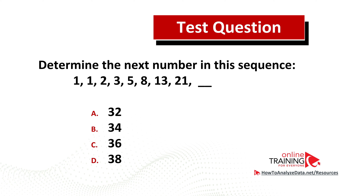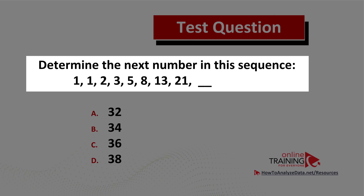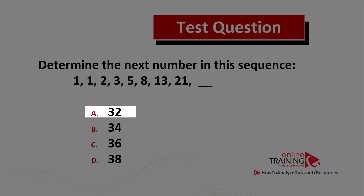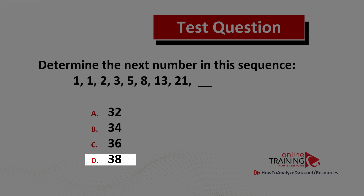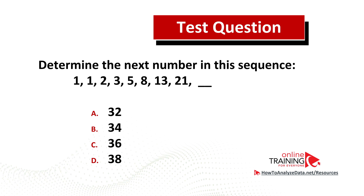Here is a question from the real test you can try to solve on your own. Determine the next number in this sequence: 1, 1, 2, 3, 5, 8, 13, 21, and then the missing number. You have four choices: A) 32, B) 34, C) 36, D) 38. Feel free to pause and try to solve it. Post your answer and rationale in the comments. Subscribe to see a detailed answer in a future video. Thanks for participating, and good luck!